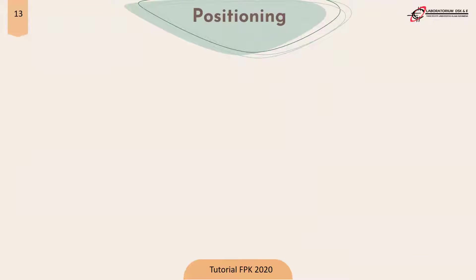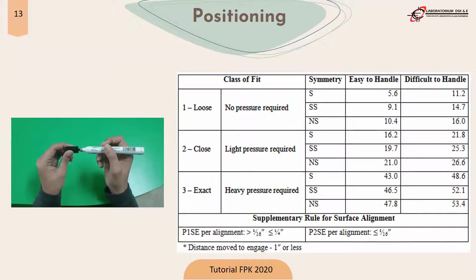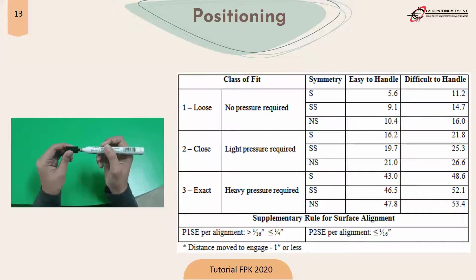The next element is positioning. There are two classifications: easy to handle and difficult to handle. The determination is subjective, according to the operator. Easy to handle means it is easy to hold the object; difficult to handle means it is hard to hold the object. The symmetry descriptions are: S (symmetric) means the object remains the same position and shape after being divided from its center — for example, a square; SS (semi-symmetric) means a different position and shape after dividing from its center — for example, a rectangle; NS (non-symmetric) means the shape and position have different sizes when divided from the midpoint — for example, an irregular shape.